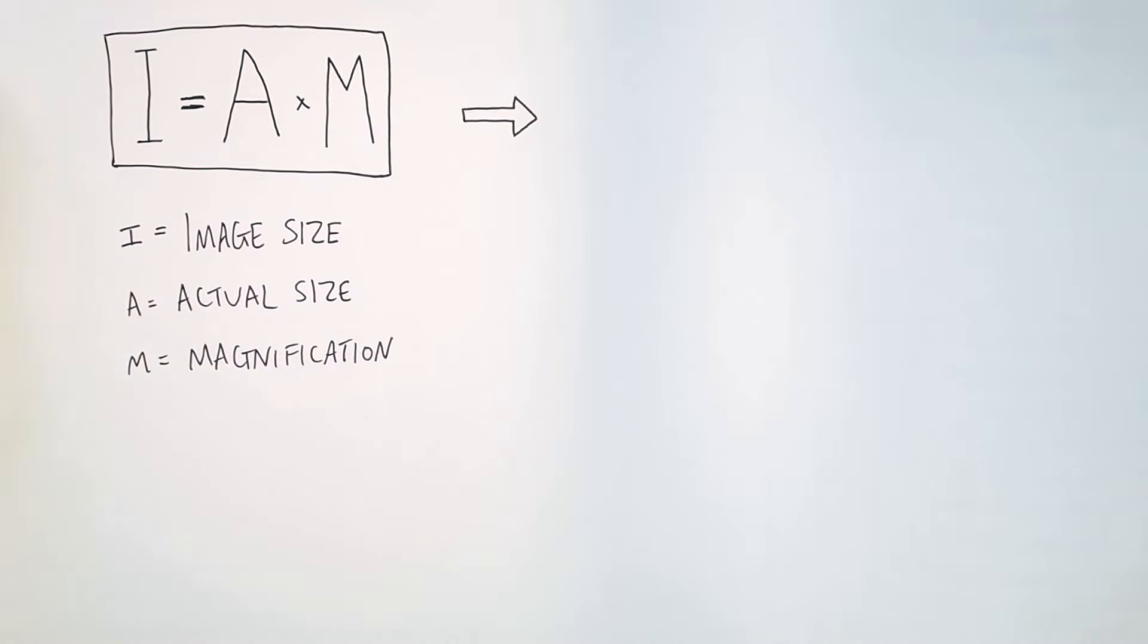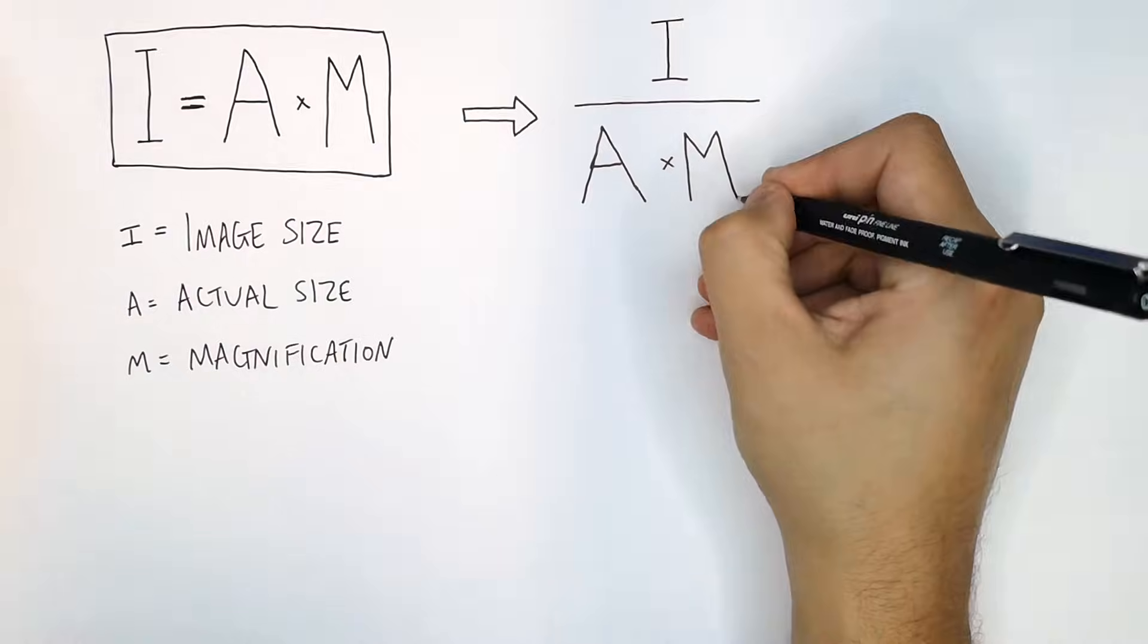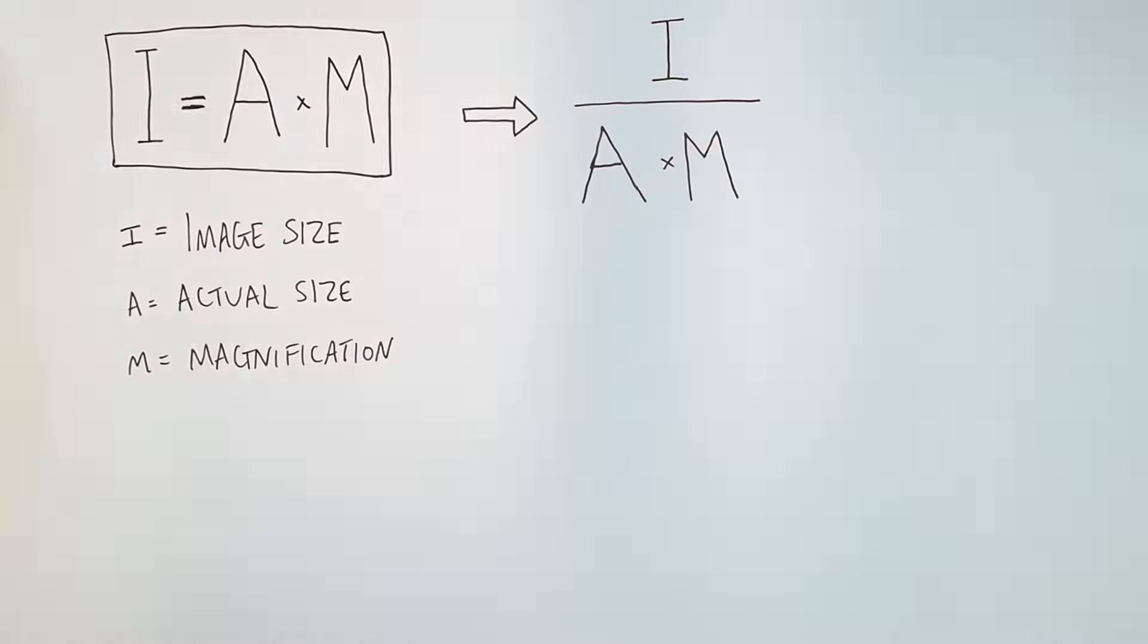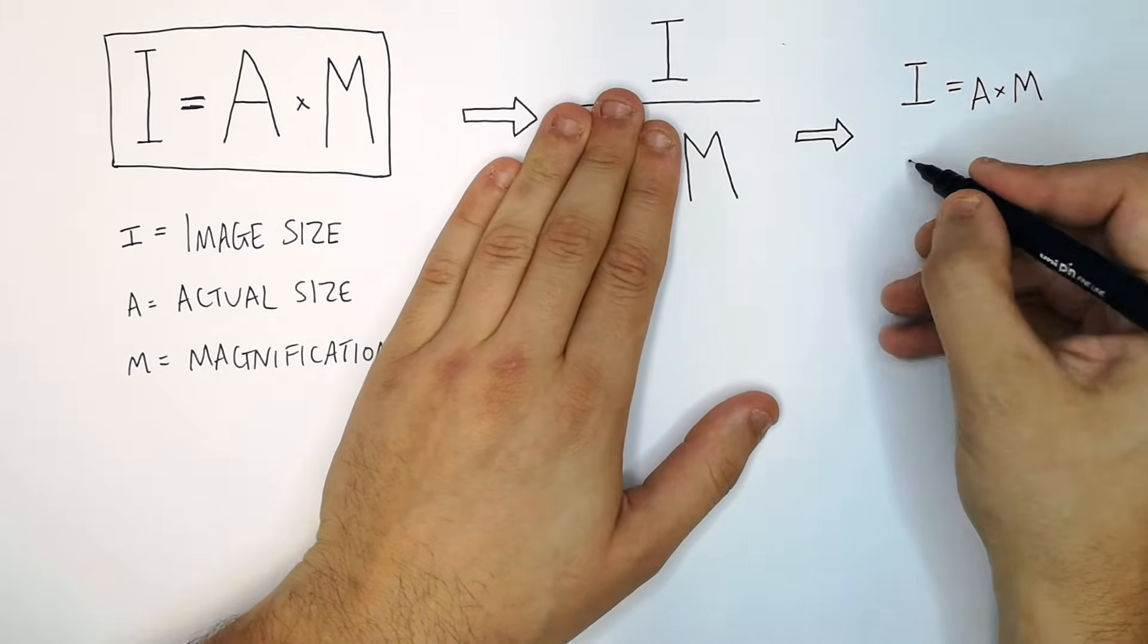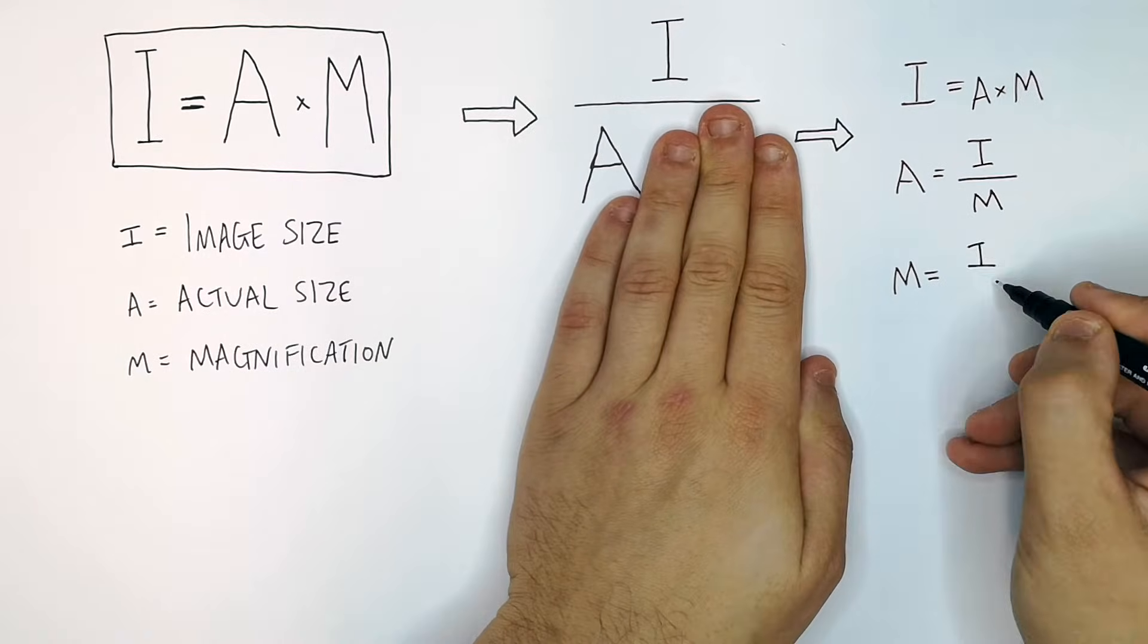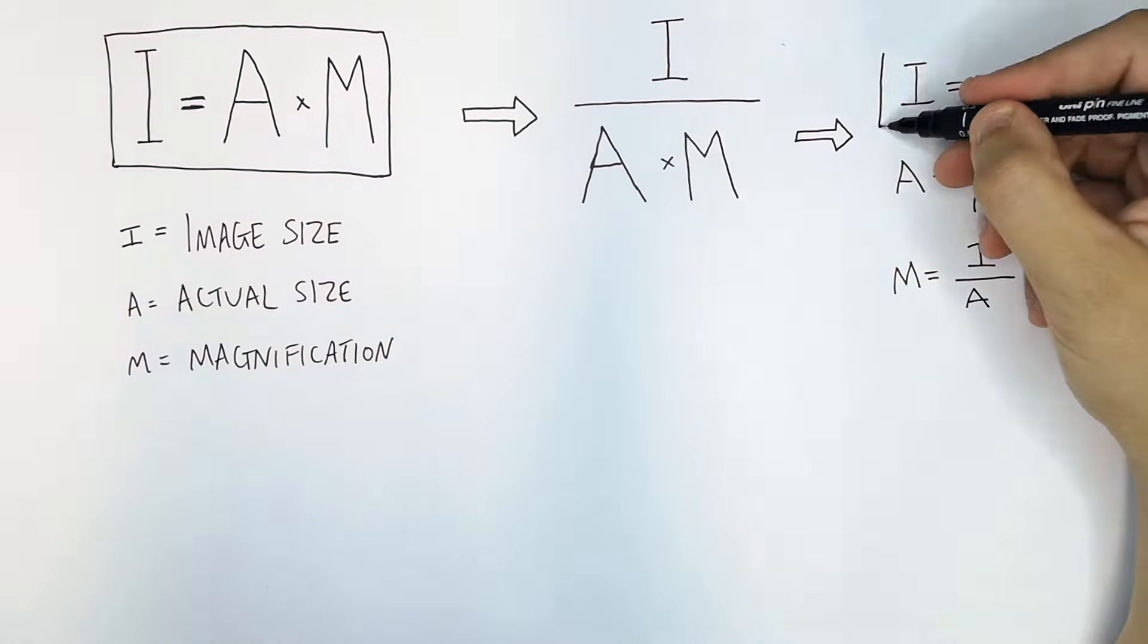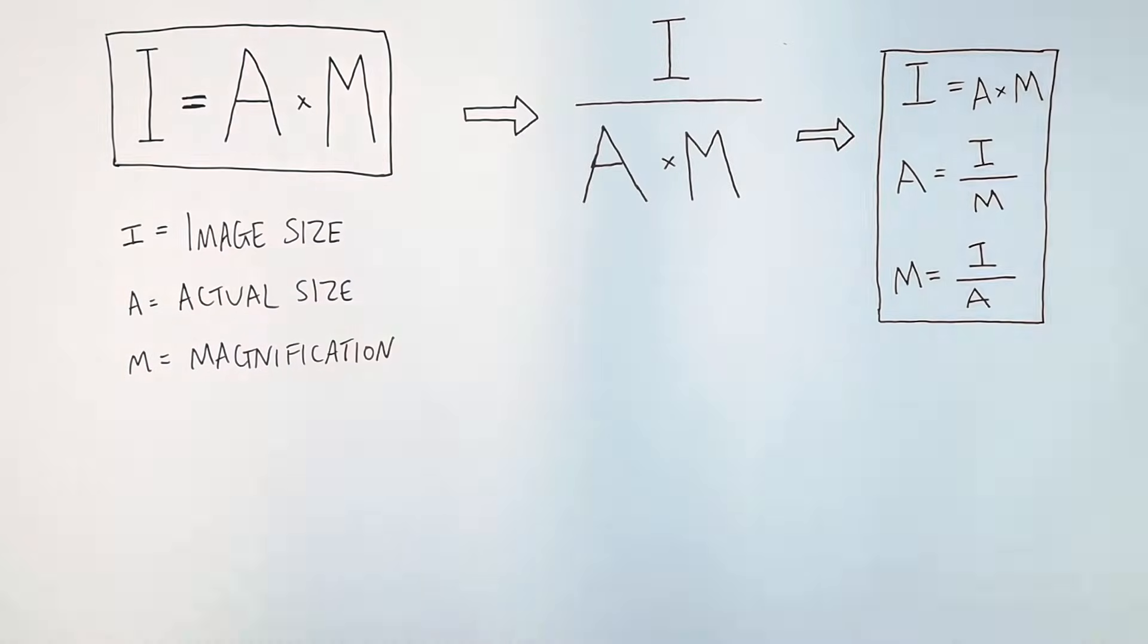You can make the triangle by putting the I over the A times M. Now you can rearrange for any subject. Cover the I, I equals A times M. Cover the A, A equals I over M. Cover the M, M equals I over A. So now you can rearrange the formula to make any letter the subject.